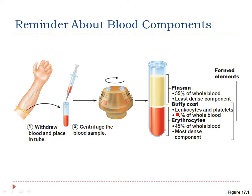If you notice here on this diagram, the leukocytes are your white blood cells and your platelets. They only make up about 1% of the components of whole blood. So they're not a huge component of your bloodstream, but they play very, very important roles.